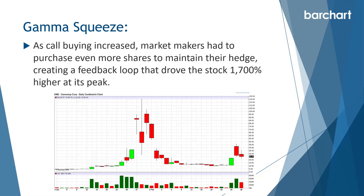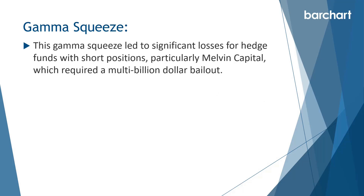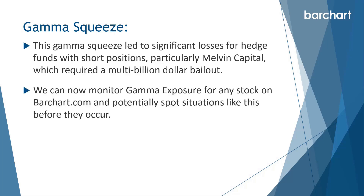You can see that pretty dramatic move on the chart. Anyone trading during that time will remember it very well — it was a crazy time. This gamma squeeze led to significant losses for hedge funds with short positions, particularly Melvin Capital, which required a multi-billion dollar bailout. We can now monitor gamma exposure for any stock on Barchart.com and potentially spot situations like this before they occur.